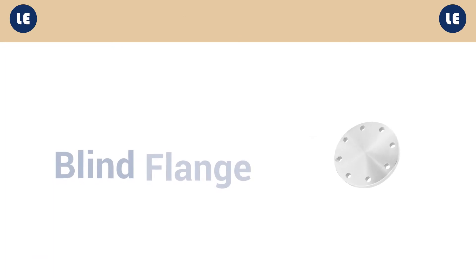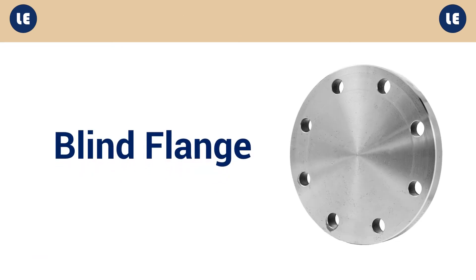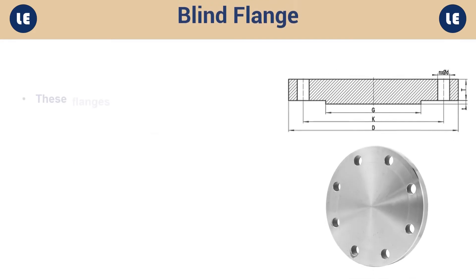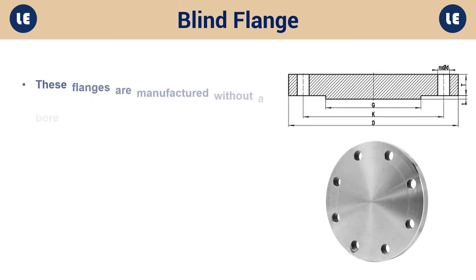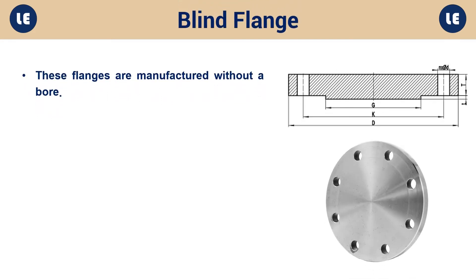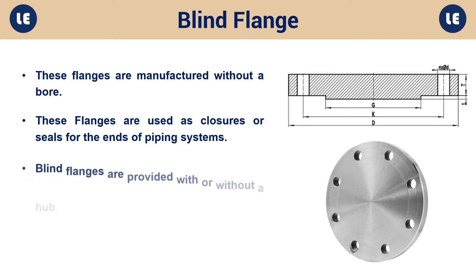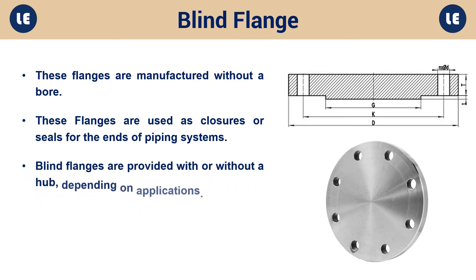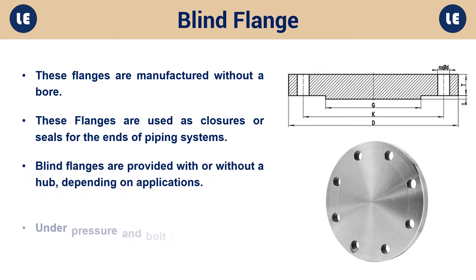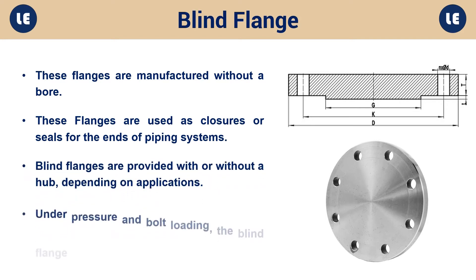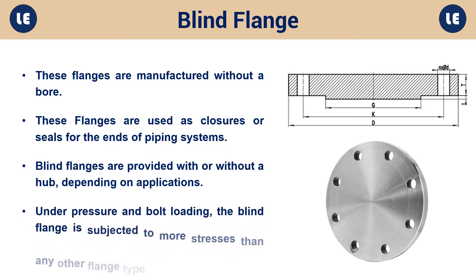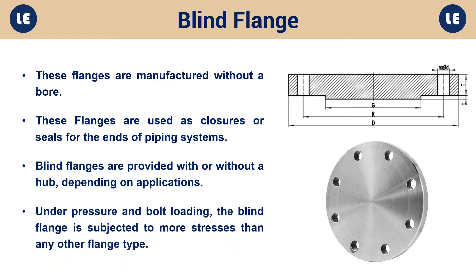Blind flange: These flanges are manufactured without a bore and are used as closures or seals for the ends of piping systems. Blind flanges are provided with or without a hub, depending on the application. Under pressure and bolt loading, the blind flange is subjected to more stresses than any other flange type.